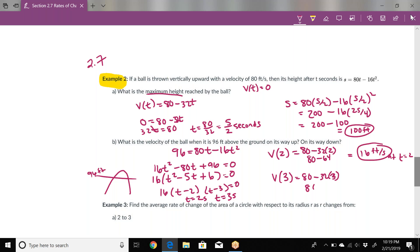The other one is 80 - 96, so that comes out as -16 feet per second at t = 3 seconds.